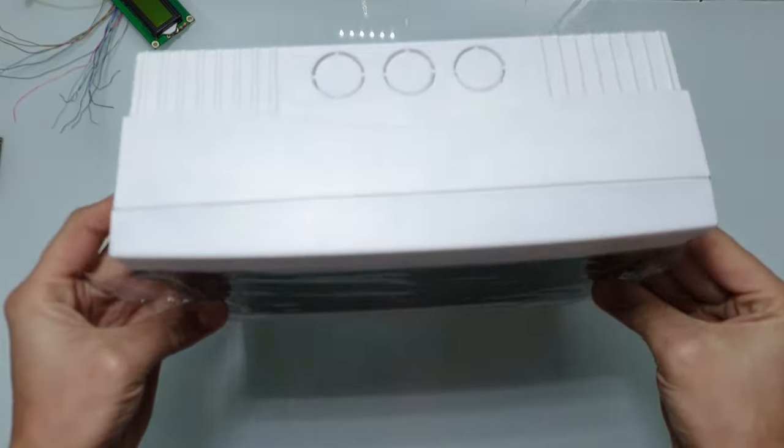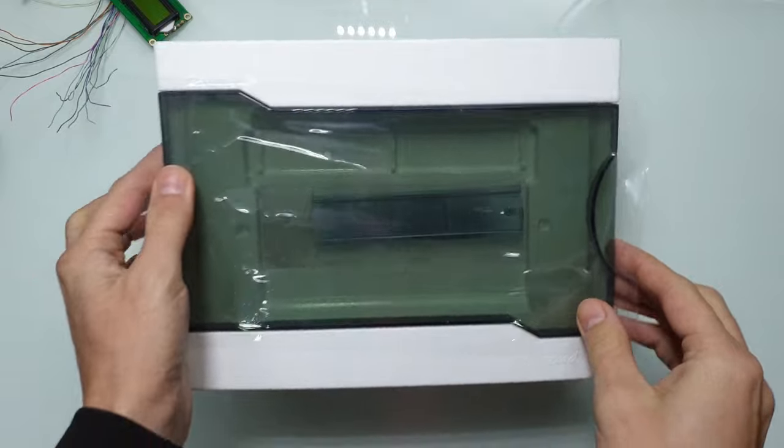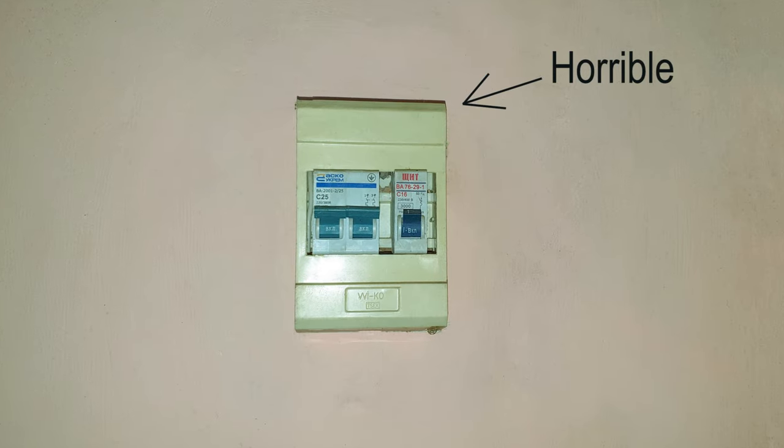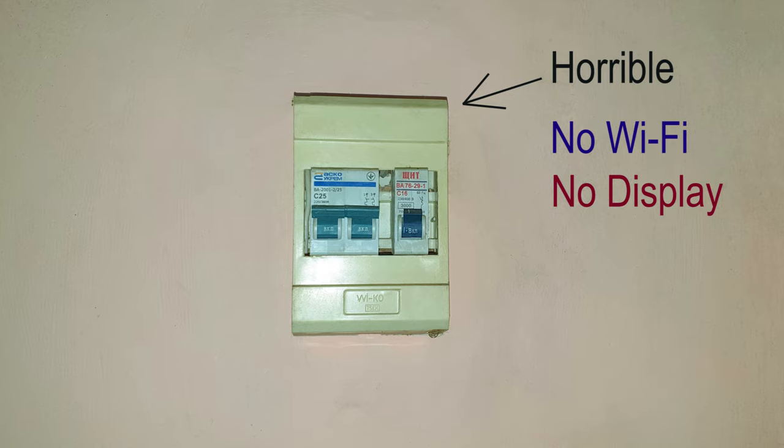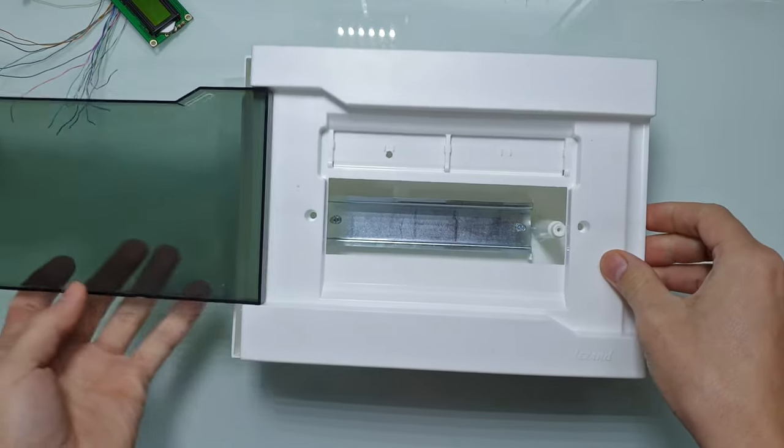Hi guys, it's 2021. We're supposed to have flying cars by now and smart robots everywhere, but the distribution board in my house still looks like this. This is horrible - no Wi-Fi, no display, nothing. And as the guy who loves DIY home automation, I take it personally.